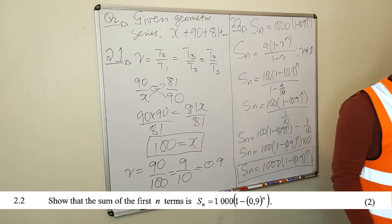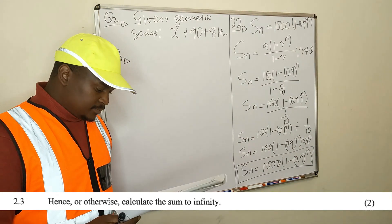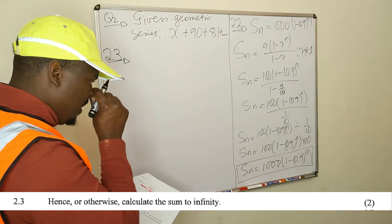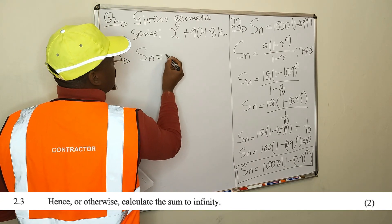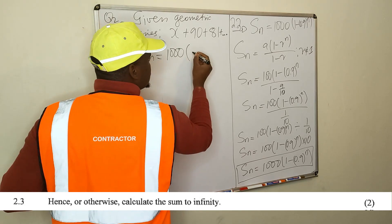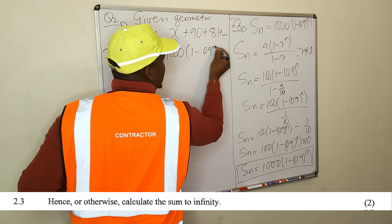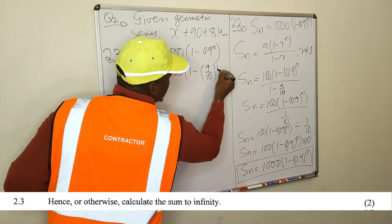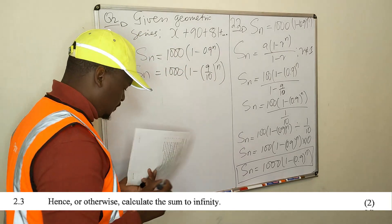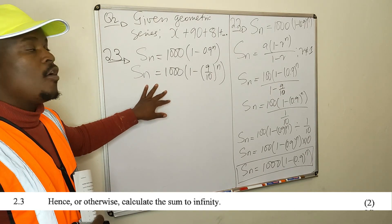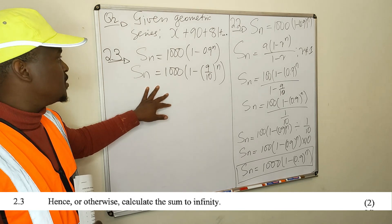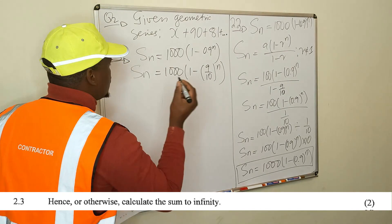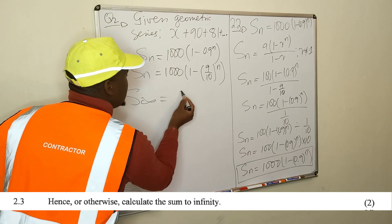Go to the next one, 2.3. Hence or otherwise calculate the sum to infinity. So they want to define the sum to infinity. You already proved that S_n is equal to 1000 times 1 minus 0.9 to the n, the same as 1000 times 1 minus 9 over 10 raise n. So this is the sum of the first n terms of the series. Now if you want to find the sum to infinity, what you do? You can use your simplified formula.